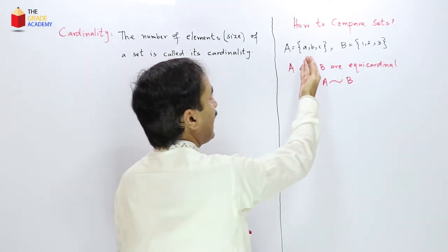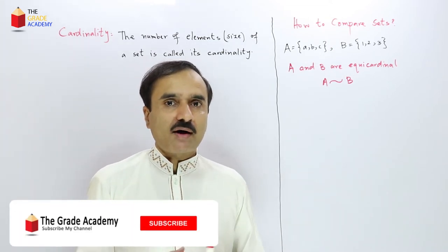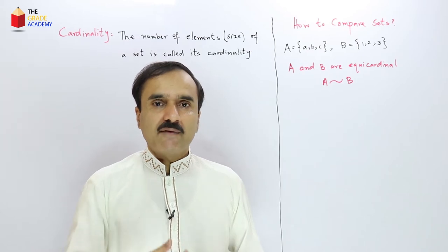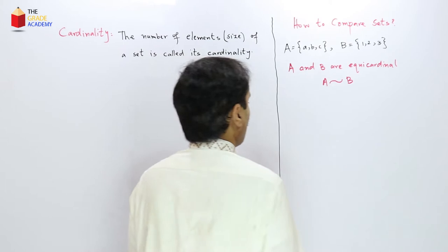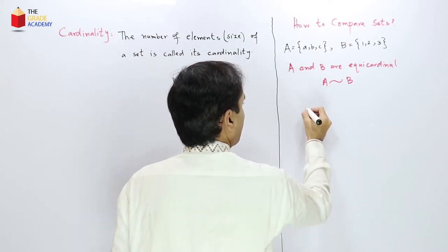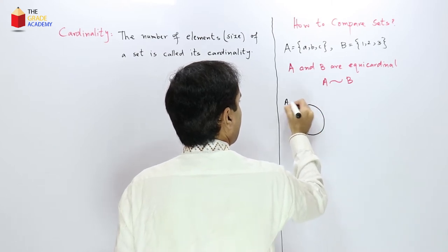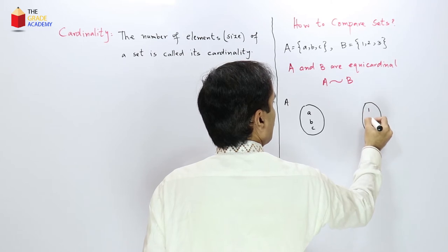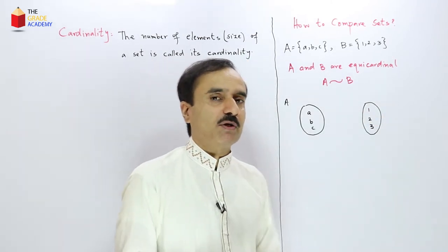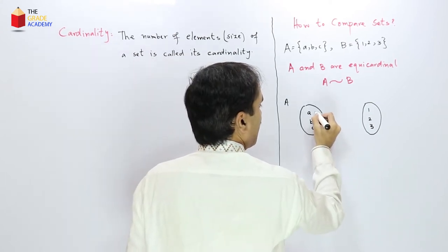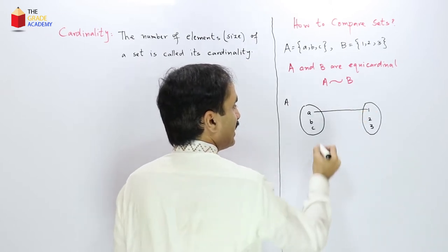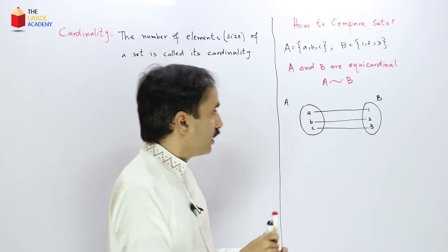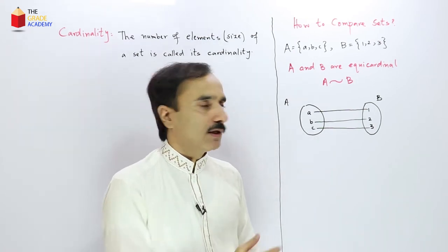Now let us compare the elements of these two sets by drawing a correspondence between them. We will see what type of correspondence we can have. Taking the elements of set A and the elements of set B, we can correspond, for example, element A to element 1 in the second set. Similarly, we can correspond B to 2 and C to 3. We have drawn a correspondence or mapping between these two sets.